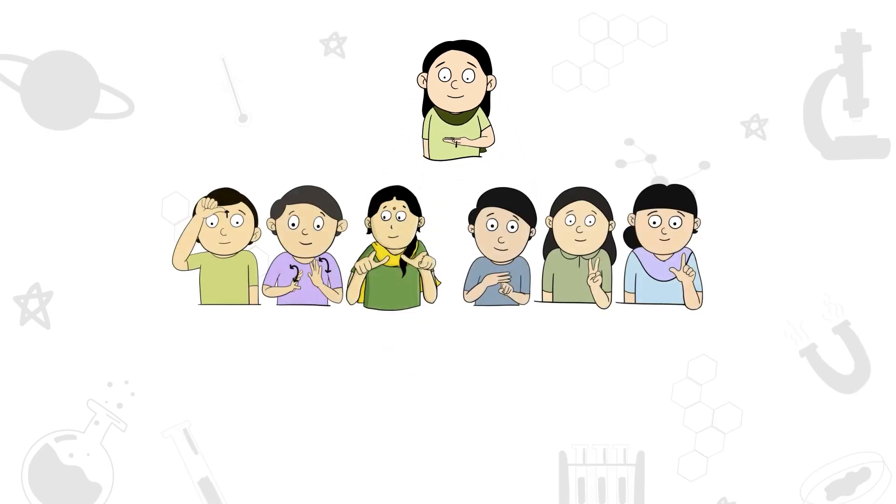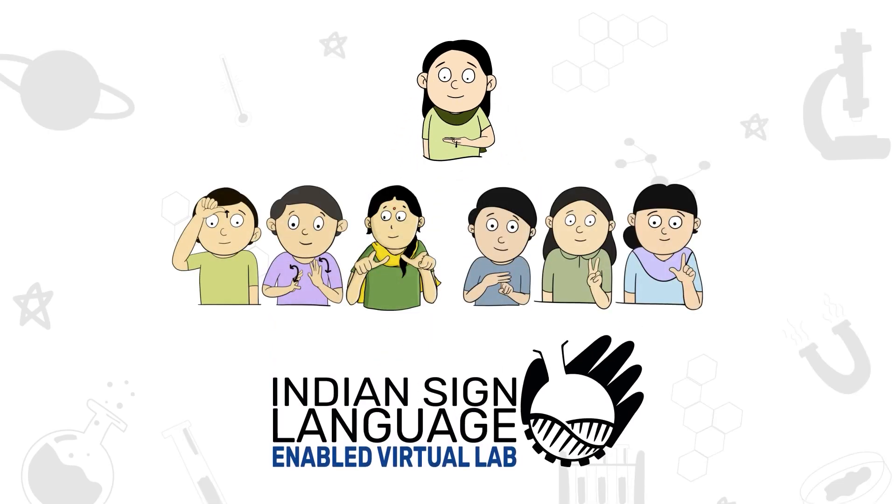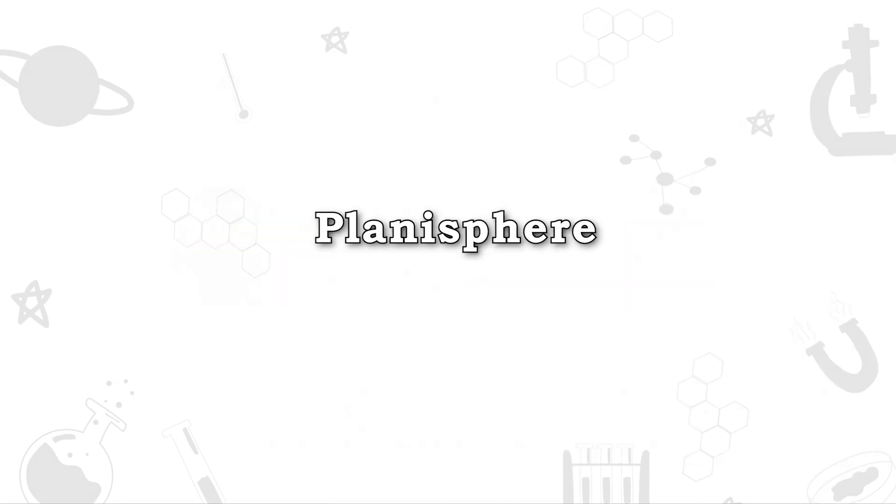Welcome to ISL Enabled Virtual Lab of CSIR. Of the entire night sky that we see, the sky is divided into 88 constellations.